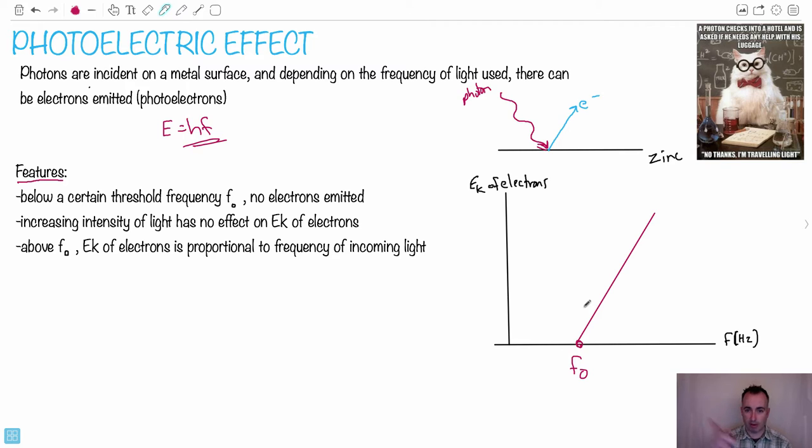Why should there be this threshold? Shouldn't it just be linear right through the origin? Keep in mind this: increasing the intensity of the light has no effect on the kinetic energy of the electrons. The only thing that changes the energy of the electrons is this. Once you pass this magical threshold frequency, once your photons have more than this amount of magical energy E equals HF₀, then you always get this photoelectric effect happening.